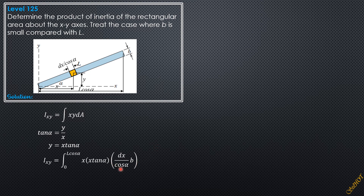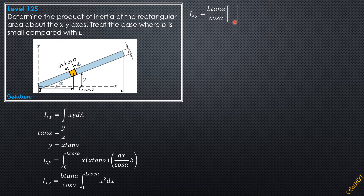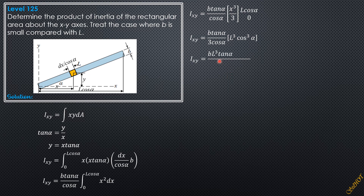Writing the constants before the integral sign: Ixy = (b·tan α / cos α) · integral from 0 to l·cos α of x² dx. Evaluating: Ixy = (b·tan α / cos α) · [x³/3] from 0 to l·cos α. Therefore Ixy = (b·tan α / cos α) · (l³·cos³α / 3).